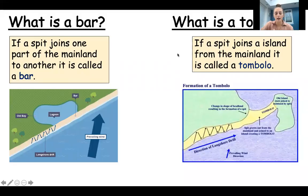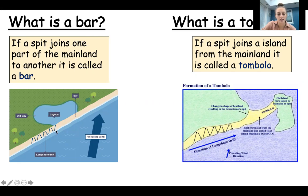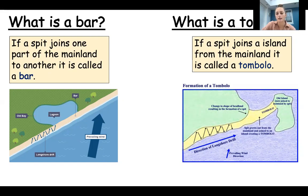Spits lead to the formation of two other depositional landforms. The first is a bar — a bar forms when a spit joins another part of the mainland. Remember, a spit is attached to one part of the mainland with a curved hook at the other end. A bar forms when the beach material extends all the way across and joins another part of the mainland, with a lagoon or bay enclosed behind it, as longshore drift carries beach material all the way across.